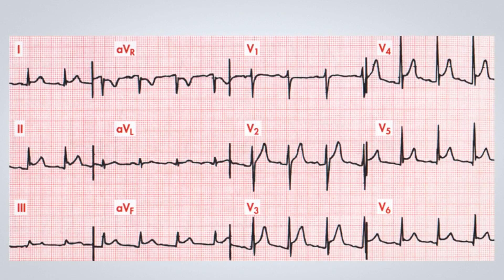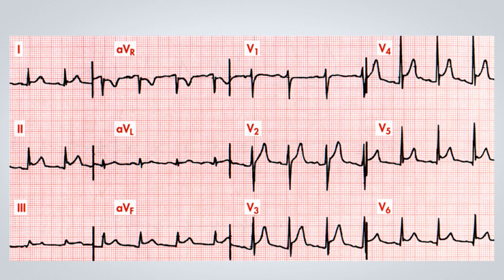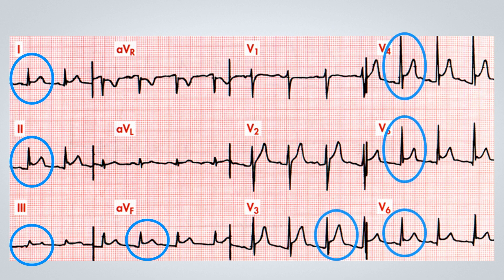Returning to the first tracing for discussion, we can observe a sinus rhythm with no alterations in the QRS complex axis and the QRS complex itself. Upon examining the ST segment, we can see an elevation of the ST segment in nearly all leads, most prominently in D1, D2, D3, aVF, and from V3 to V6.